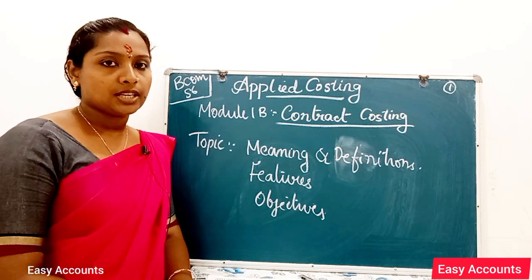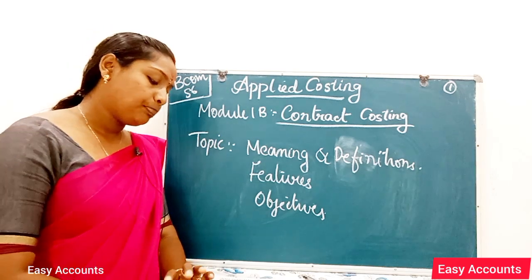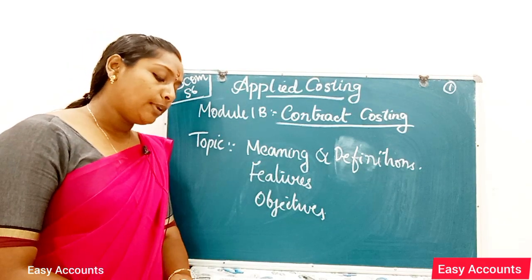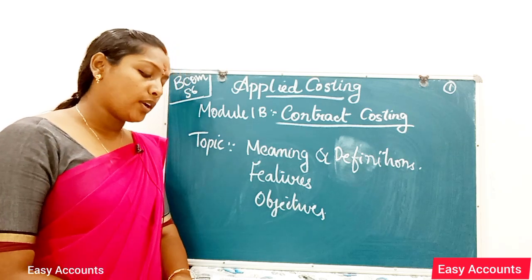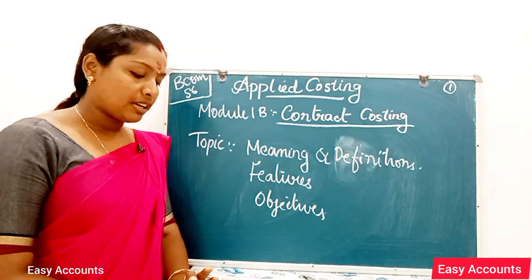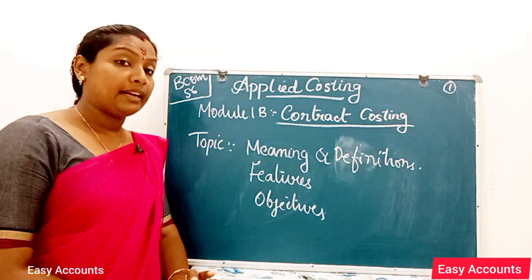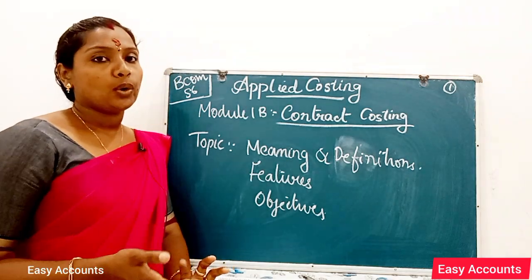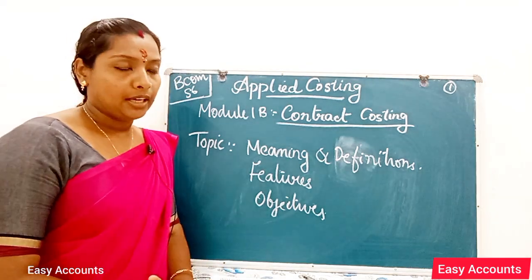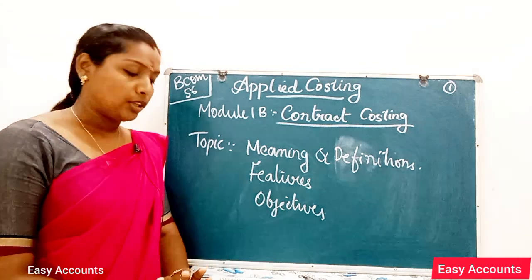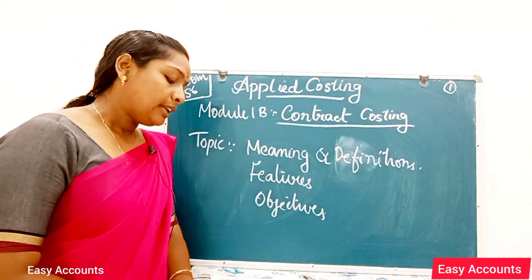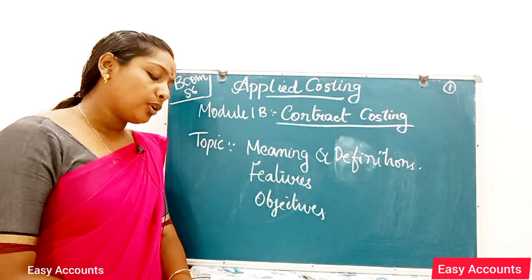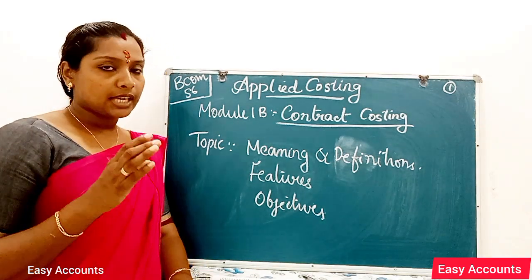Contract costing is applied to building construction work: dams, ships, bridges, roads, etc. It is the method of costing used for such construction work, and it helps to ascertain the cost of work done and the profit or loss thereof.